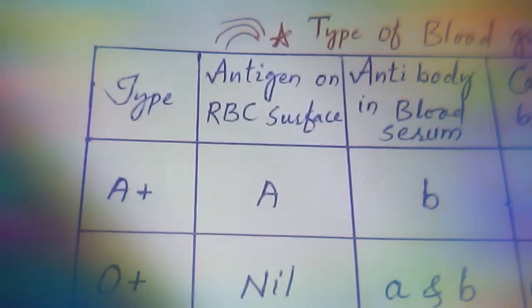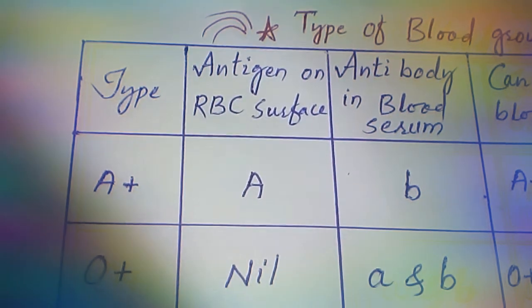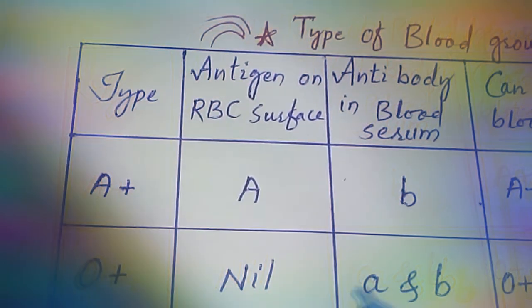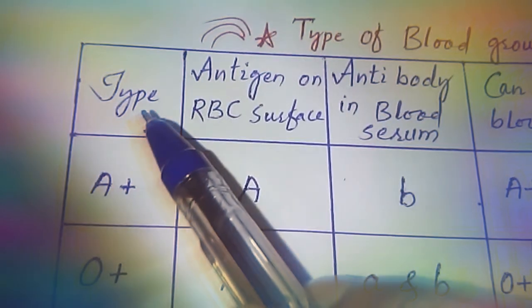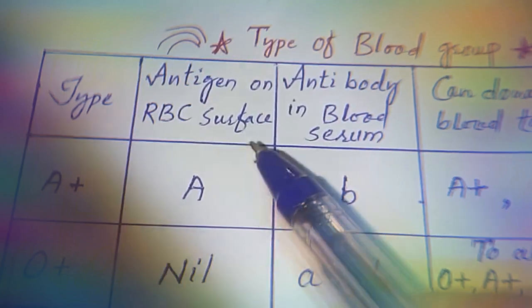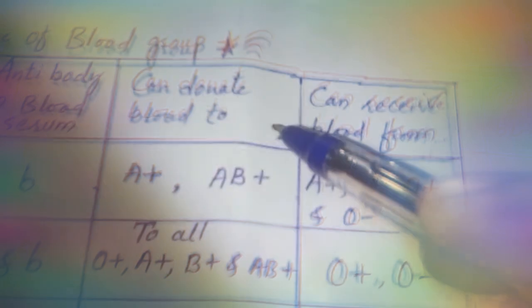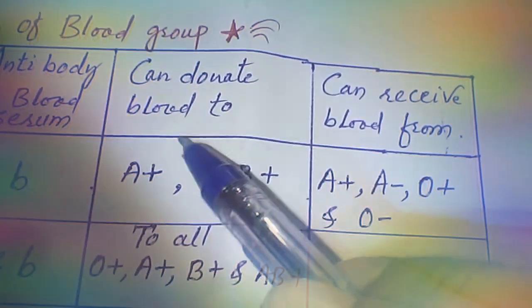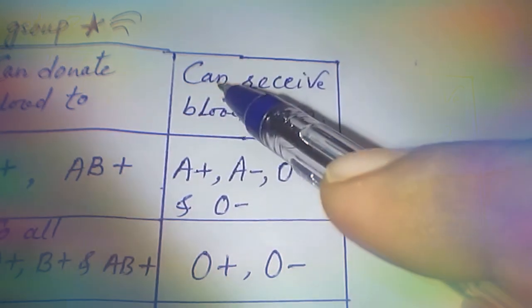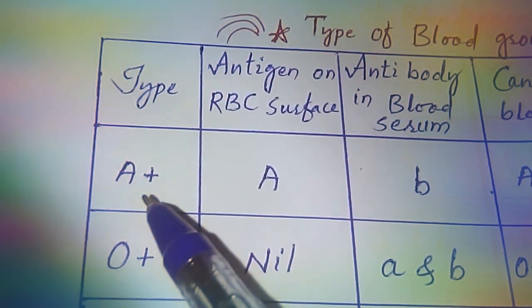Let's look at a table that will help you understand the abilities of persons having different blood groups. The columns are: blood group type, antigen present on the RBC surface, antibody in the blood serum, who the person can donate blood to, and who the person can receive blood from.